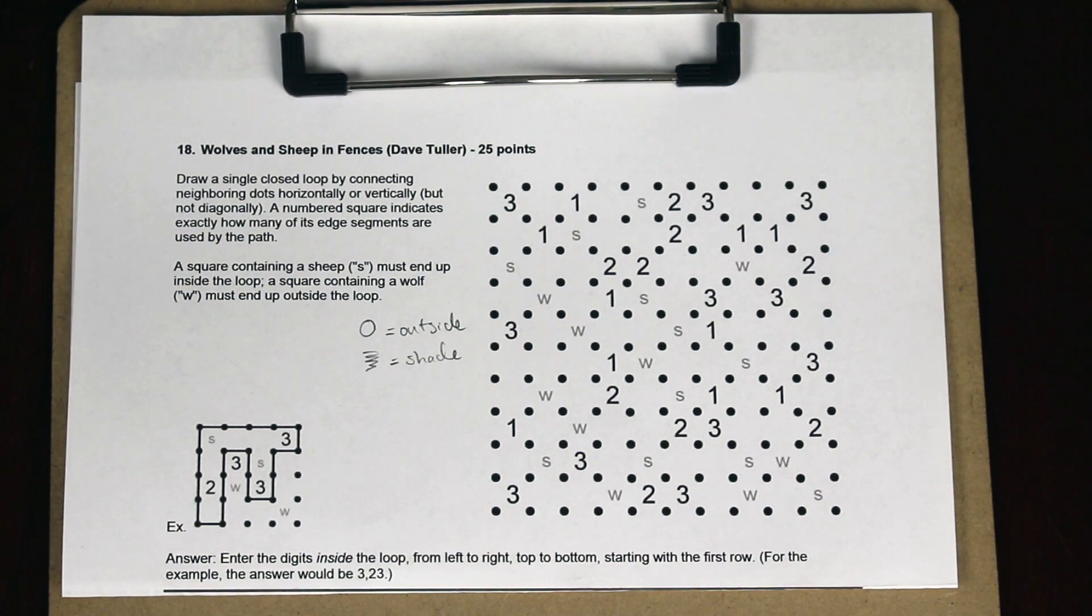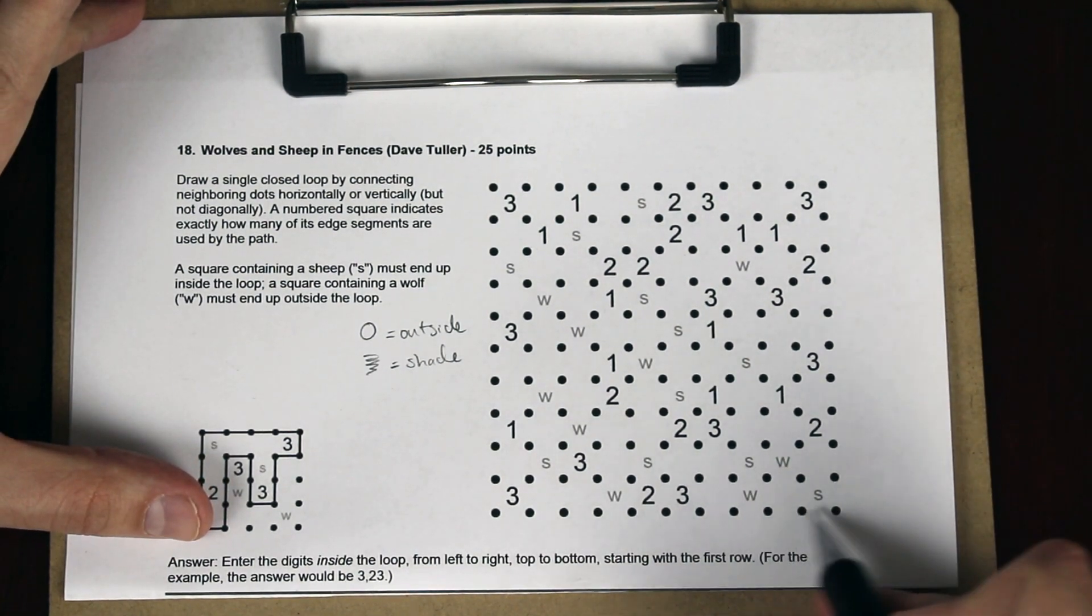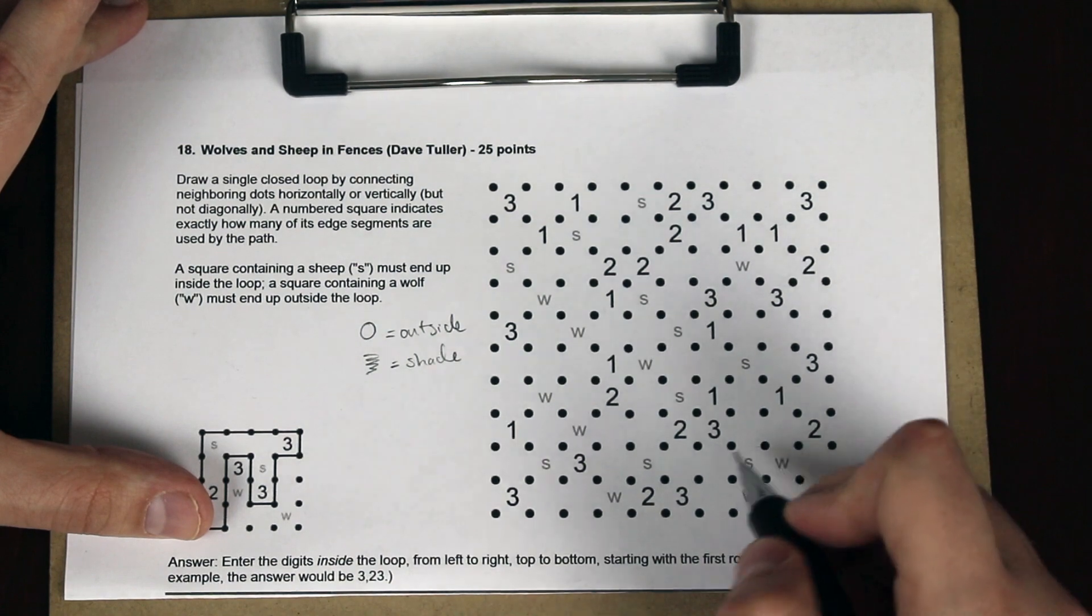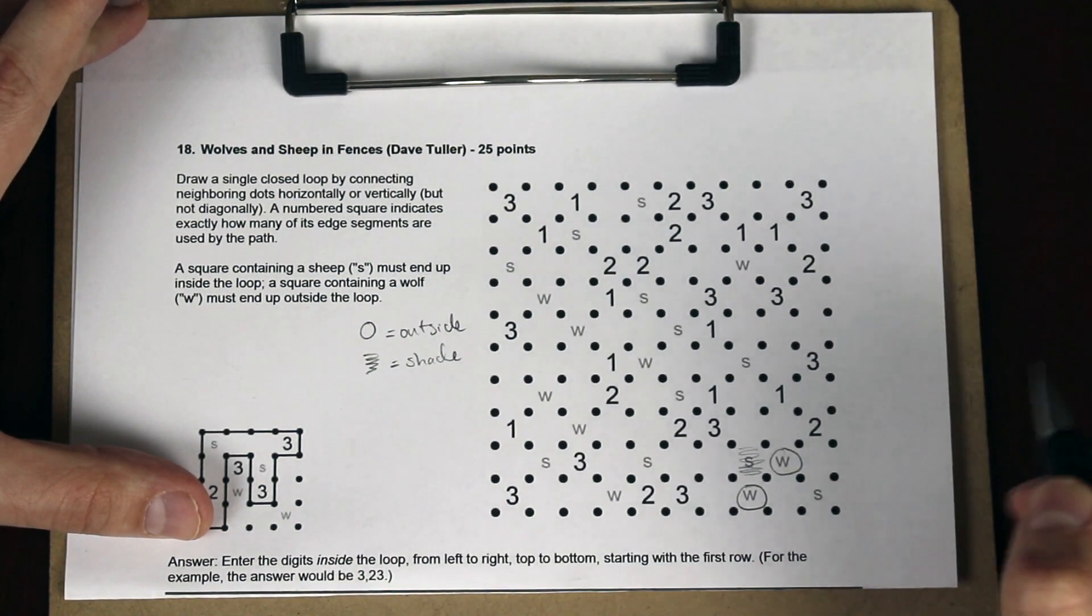When you're looking at a grid like this for the first time, and you're wondering how to break in, a good place to look is where you have clusters of clues. So, for example, down here in the lower right-hand corner, we have some wolves and some sheep next to each other. So let's shade that in, and those wolves are on the outside.